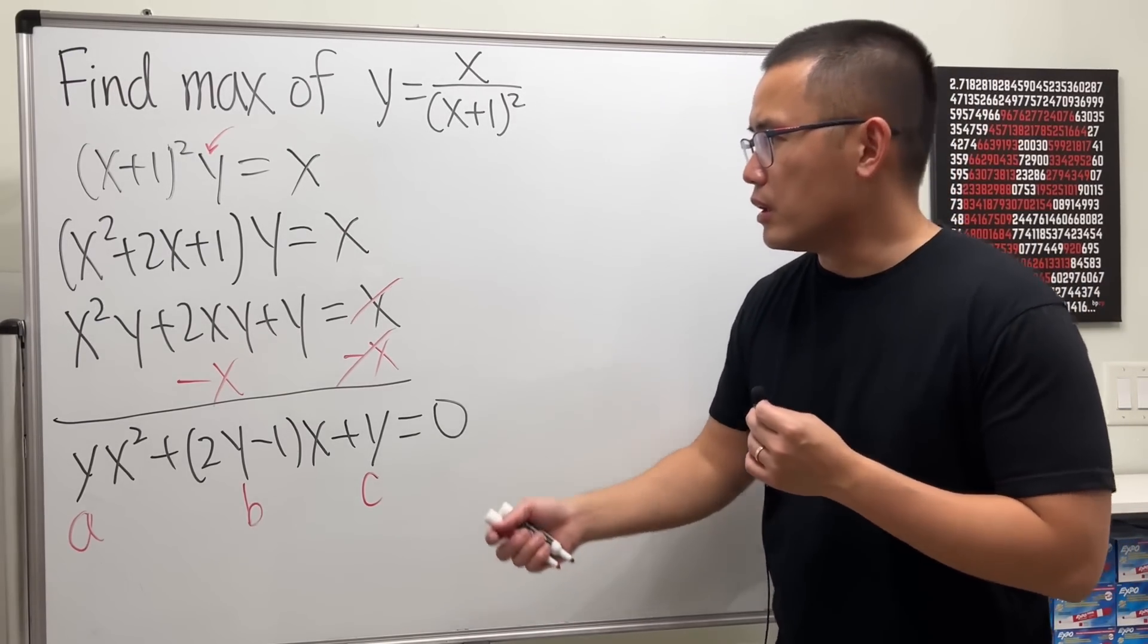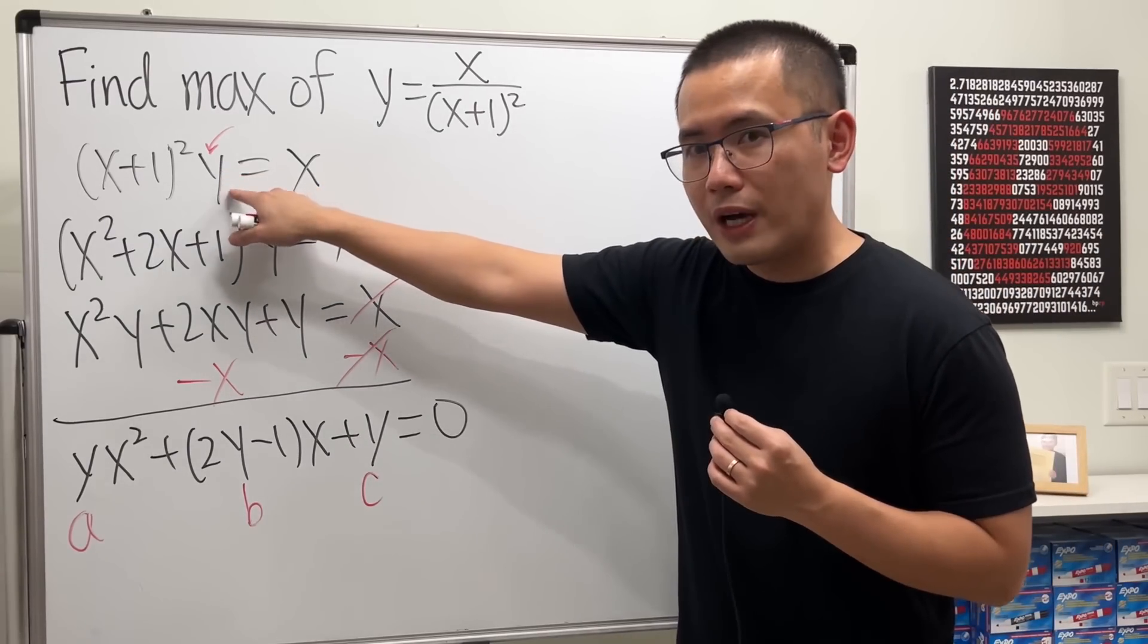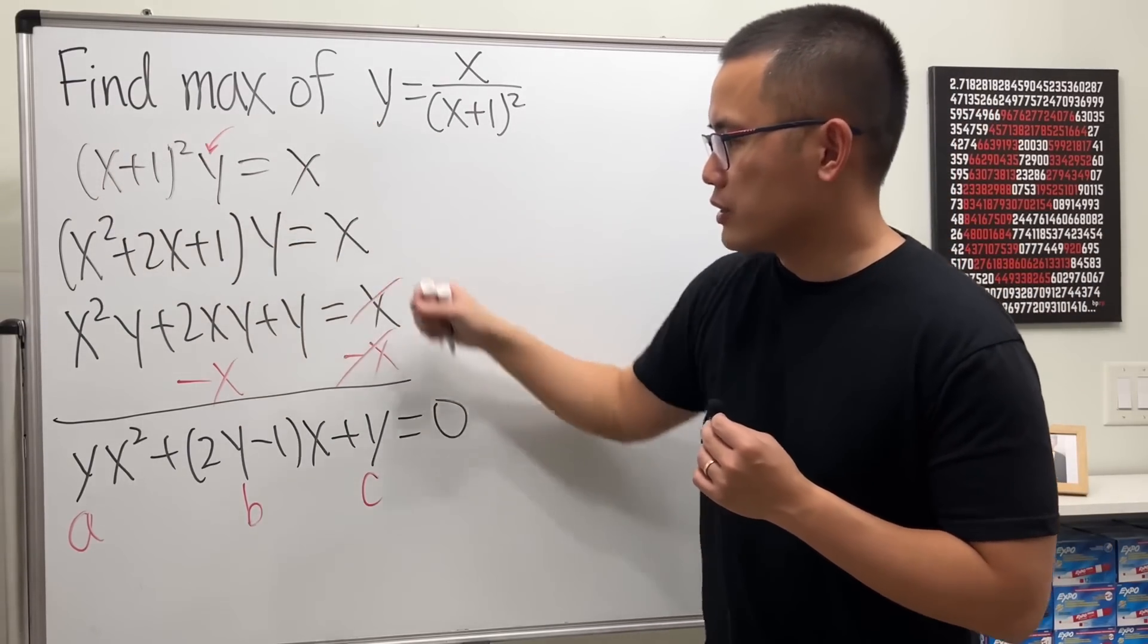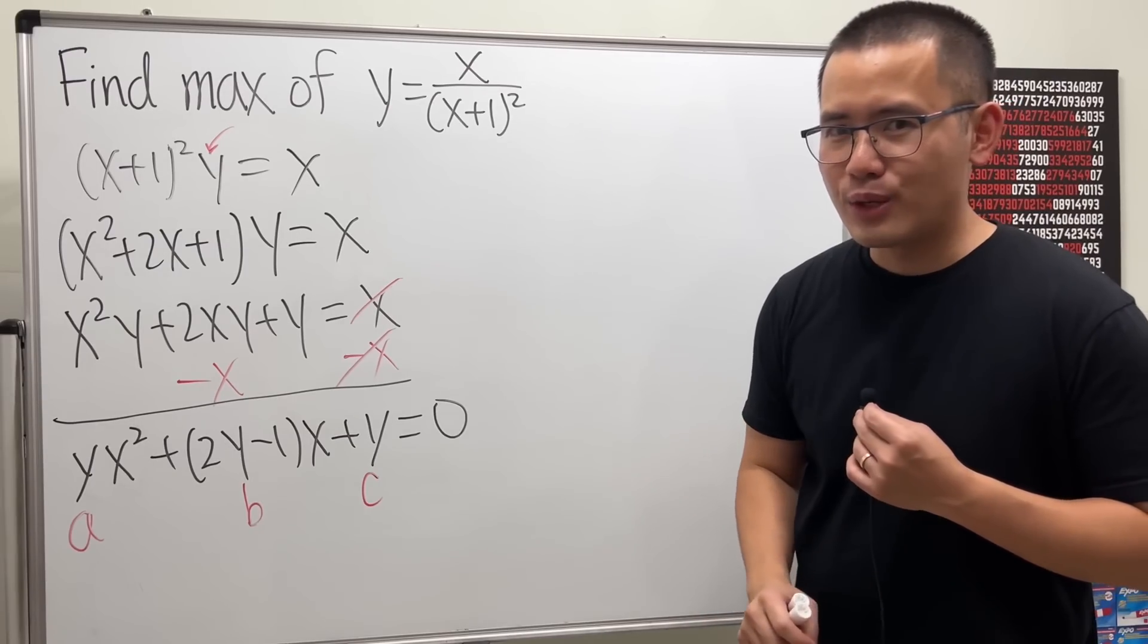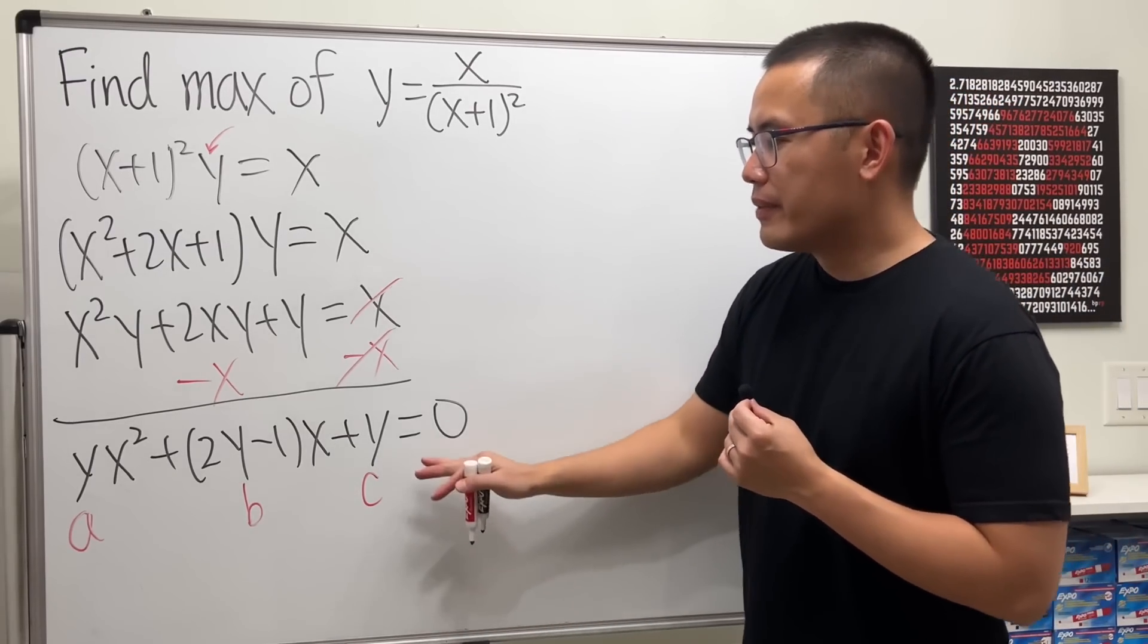And remember what we wanted to do earlier. We wanted to find the biggest y value so that this equation has a real solution. What can we do? Aha, yes, you are right. We just have to make sure that the discriminant...